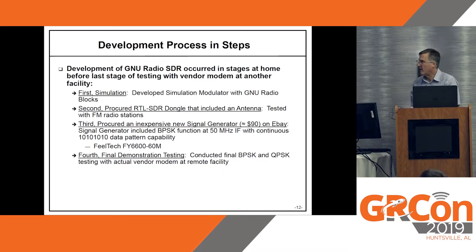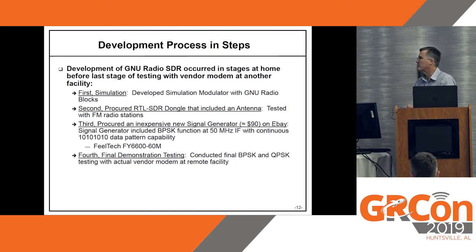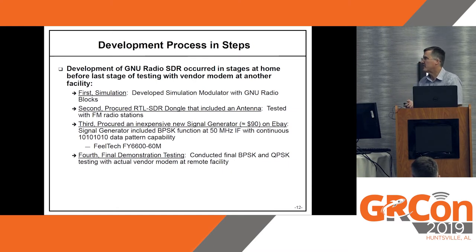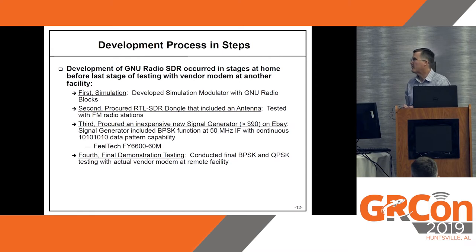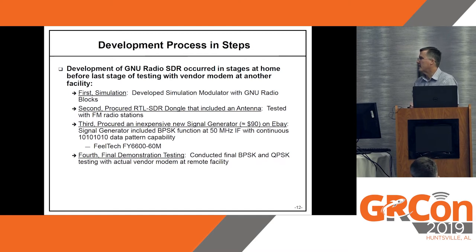The development process went in four steps. First, simulation — I used GNU Radio simulation modulator and receiver blocks to get the hang of GNU Radio. Then I bought the RTL dongle, which came with an antenna, and tested it with FM stations. Then I bought a low-cost signal generator for BPSK — all it could do was a 1-0-1-0 pattern. The last step was going to the remote facility where the vendor modem was to do the actual testing.